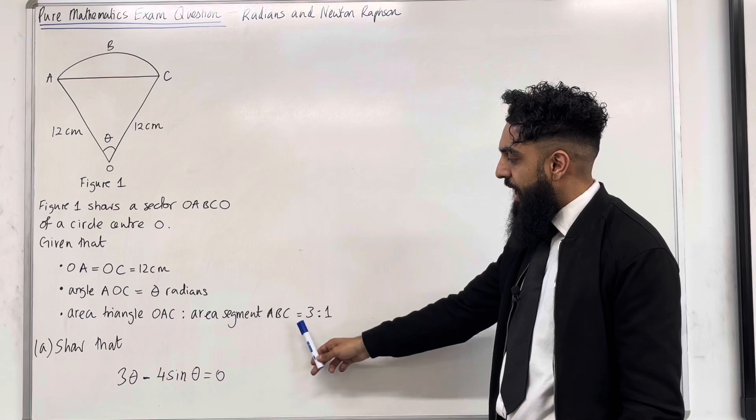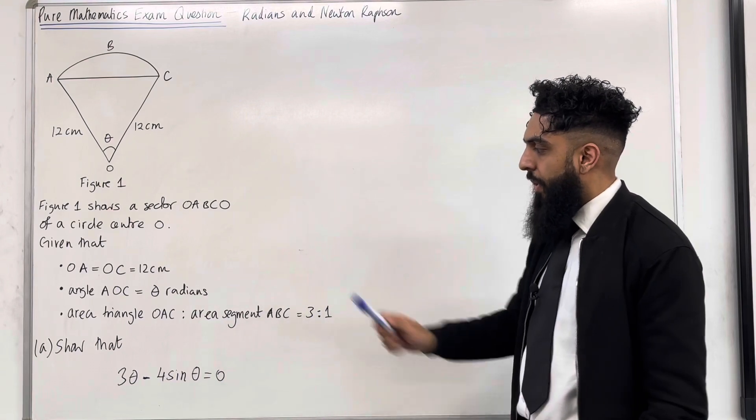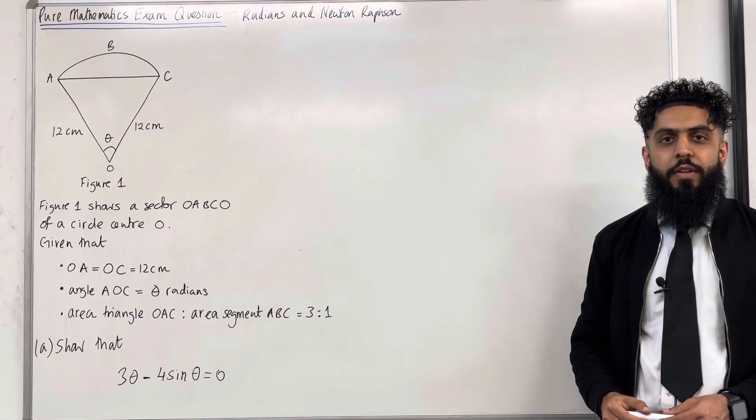Area triangle OAC to area segment ABC equals 3 to 1. Part A: show that 3 theta minus 4 sine theta equals 0.